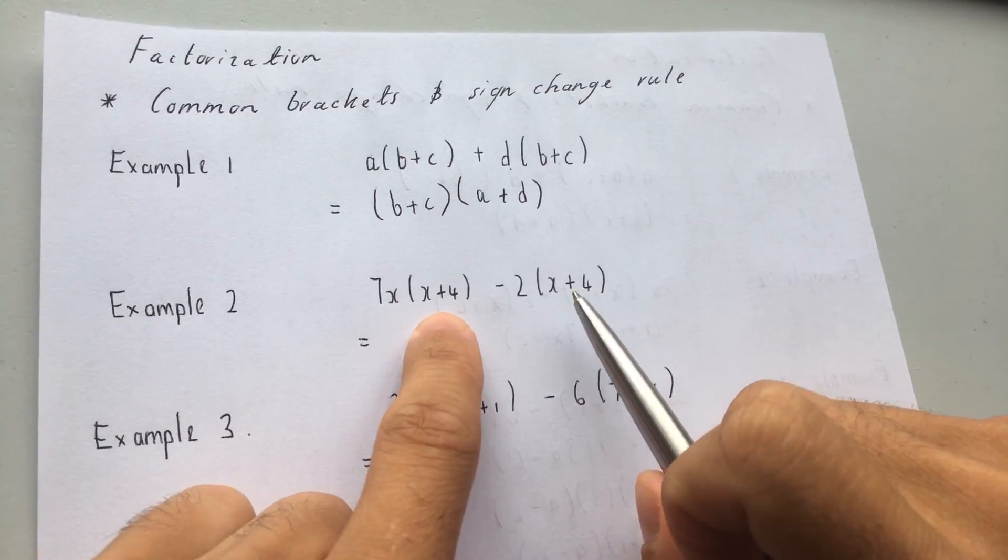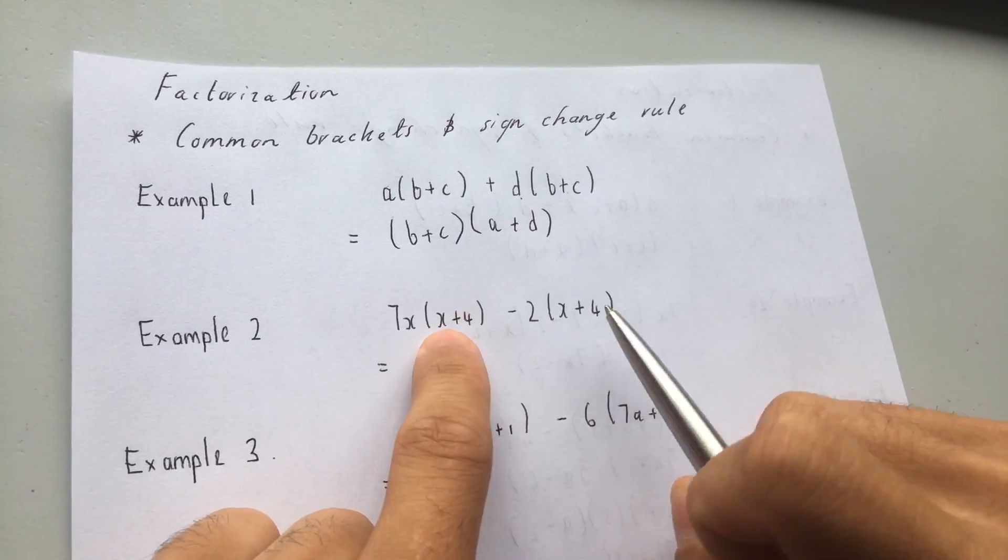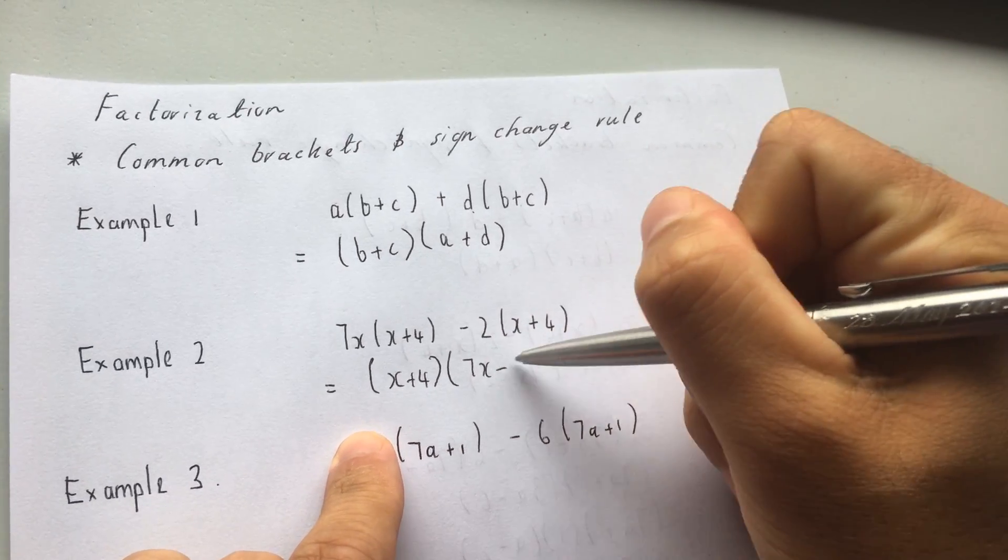Look over here. Next question. Example 2. X plus 4, X plus 4. So I have a highest common factor of X plus 4 in a bracket. So I pull out the bracket and whatever I'm left with goes into the other bracket.